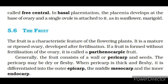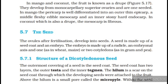The fruit. The fruit is a characteristic feature of flowering plants. It is a mature or ripened ovary developed after fertilization. If a fruit is formed without fertilization of the ovary, it is called a parthenocarpic fruit. Generally, the fruit consists of a wall or pericarp and seeds. The pericarp may be dry or fleshy. When pericarp is thick and fleshy, it is differentiated into the outer epicarp, the middle mesocarp and the inner endocarp. In mango and coconut, the fruit is known as a drupe. They develop from monocarpellary superior ovaries and are one-seeded. In mango, the pericarp is well differentiated into an outer thin epicarp, a middle fleshy edible mesocarp and an inner stony hard endocarp. In coconut, which is also a drupe, the mesocarp is fibrous.